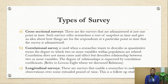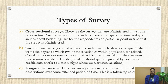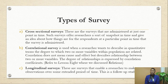The second type is correlational survey. When two or more variables are related, they are said to have a relationship, measured using correlation. Correlational survey is used when a researcher wants to describe in quantitative terms the degree to which two or more variables within a population are related. Remember, correlation does not mean causality — it only describes the relationship between two or more variables in a population.